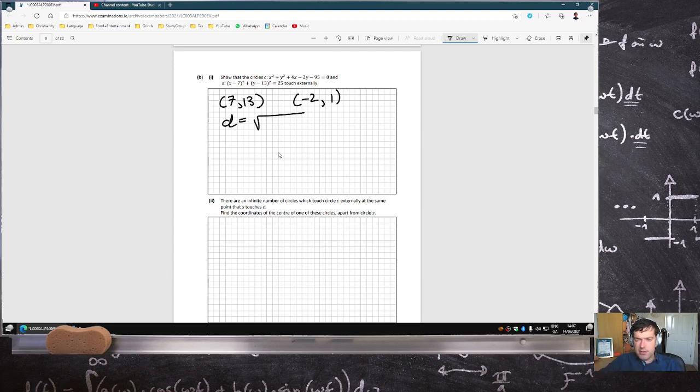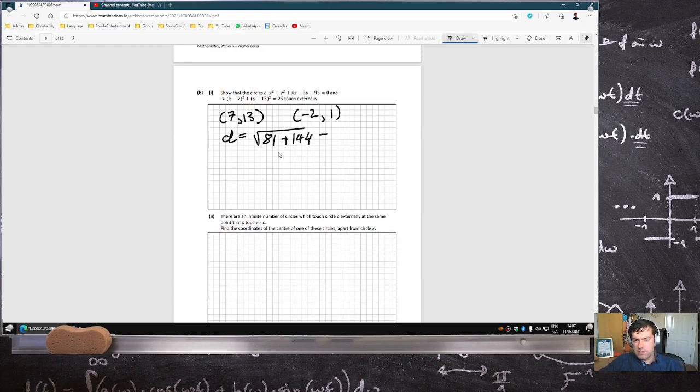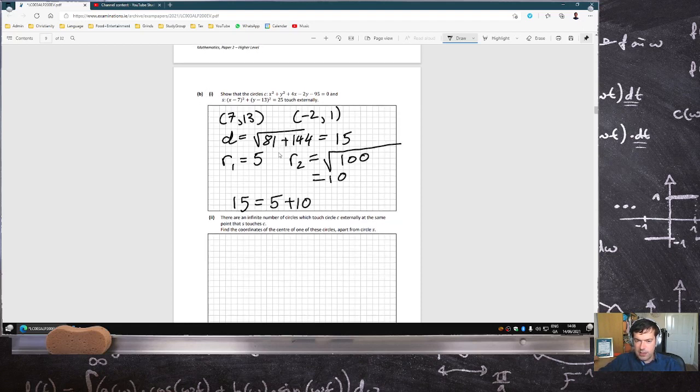So that distance there would be the square root of 81 plus 144, which is 15. Radius 1 is 5, and radius 2, oh, what's the formula? I think that it's square root minus 2 squared plus 1 squared minus the C. So that's square root of 100 then, which is 10. So indeed, 15 does equal 5 plus 10. So they touch externally.